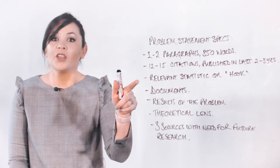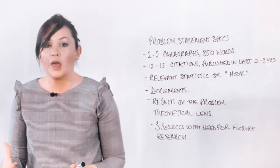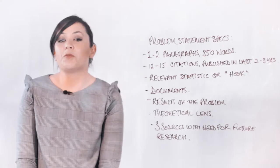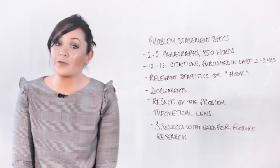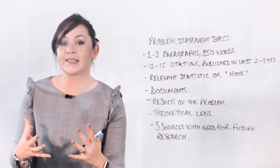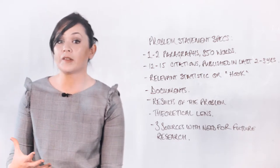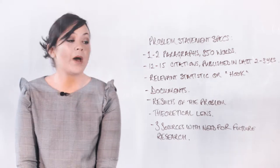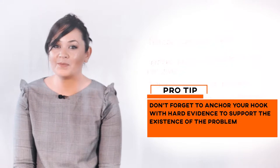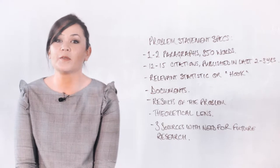Just because something is under-researched or not known doesn't mean that any time should be spent studying it. The problem statement starts to demonstrate significance in the very first sentence with a hook — often a compelling statement that points to the enormity of the problem, commonly by noting how commonly experienced it is. This is followed by the anchor, a statement that grounds or puts a finer point on that hook.